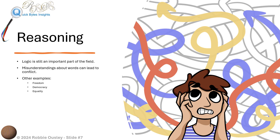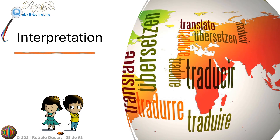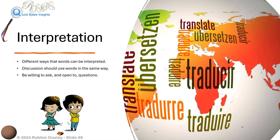There are many other examples, such as the words freedom, democracy, equality, and justice. These words are often used in political discussions, but they can have different meanings for different people. This can lead to a lot of confusion and conflict as people argue about what these words really mean. It is important to be aware of the different ways that words can be interpreted. When we are having a discussion with someone, we need to make sure that we are using words in the same way.